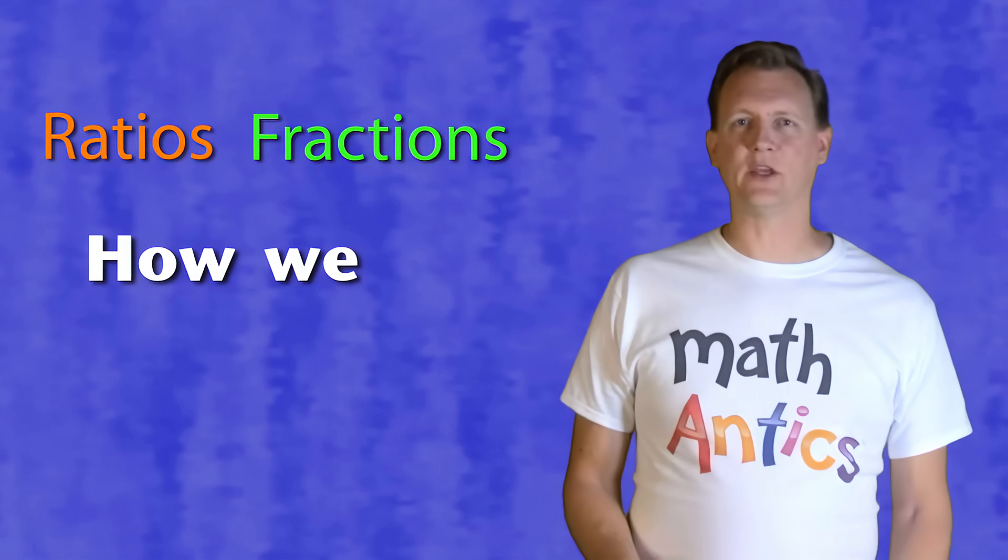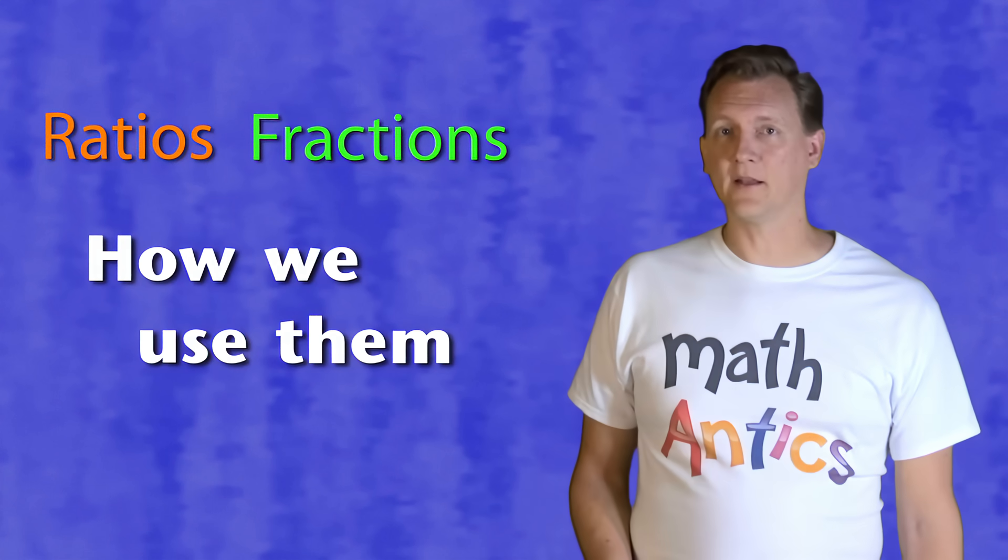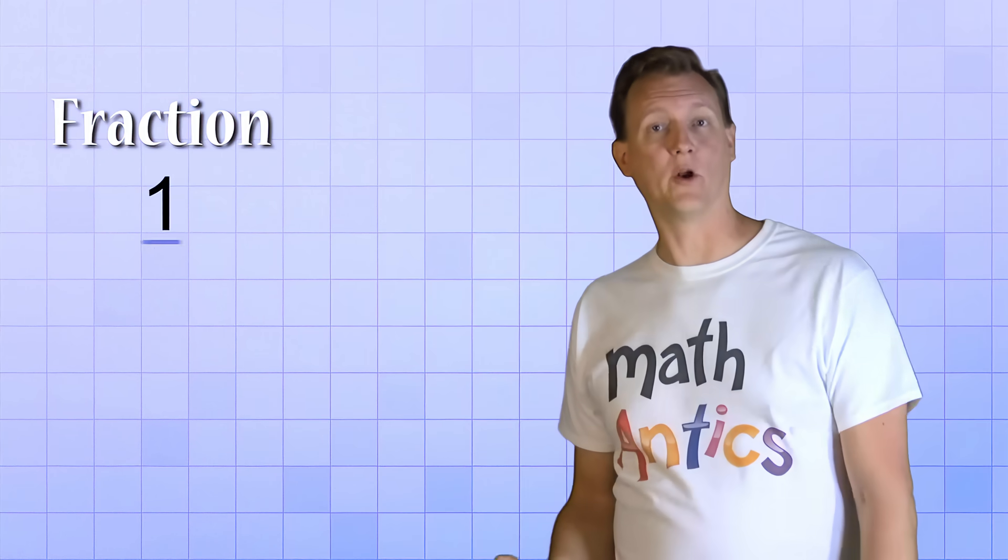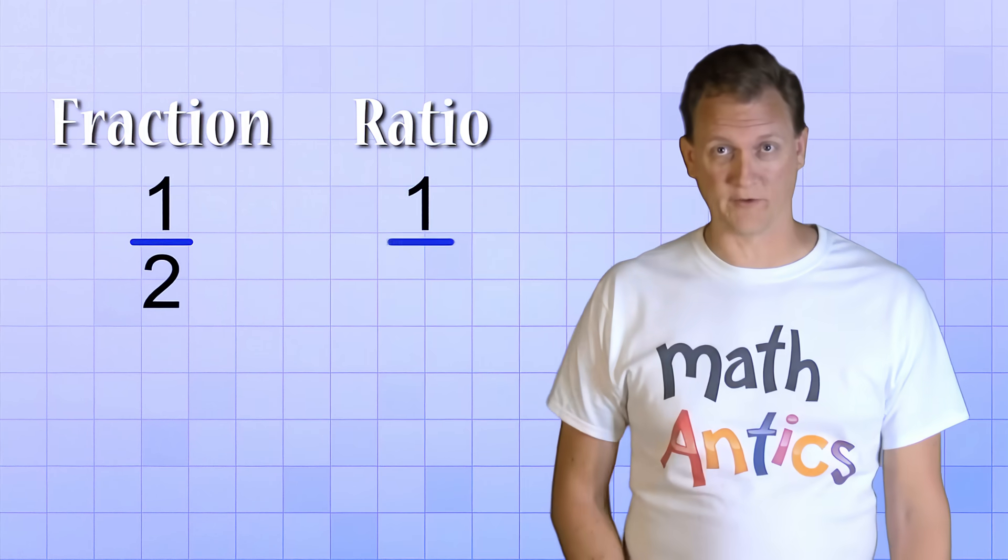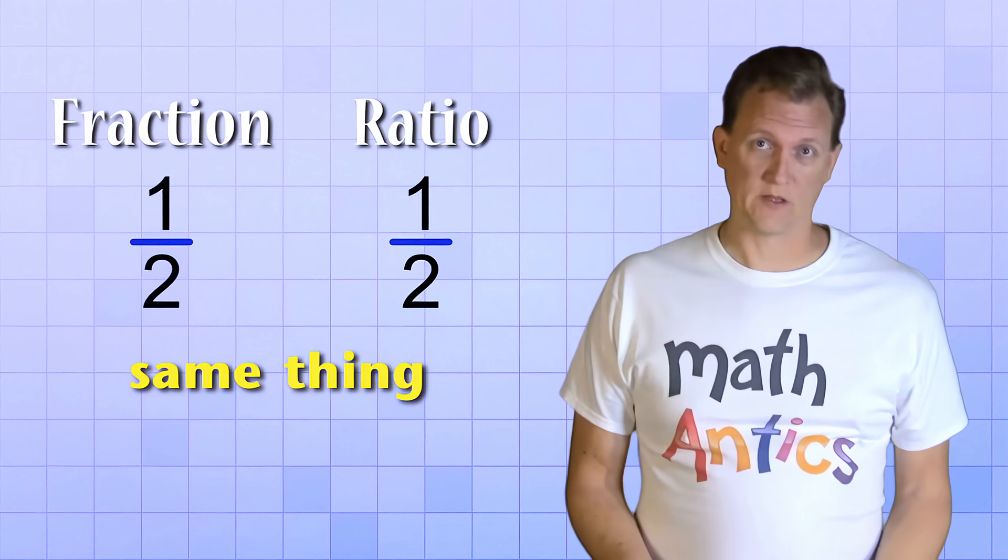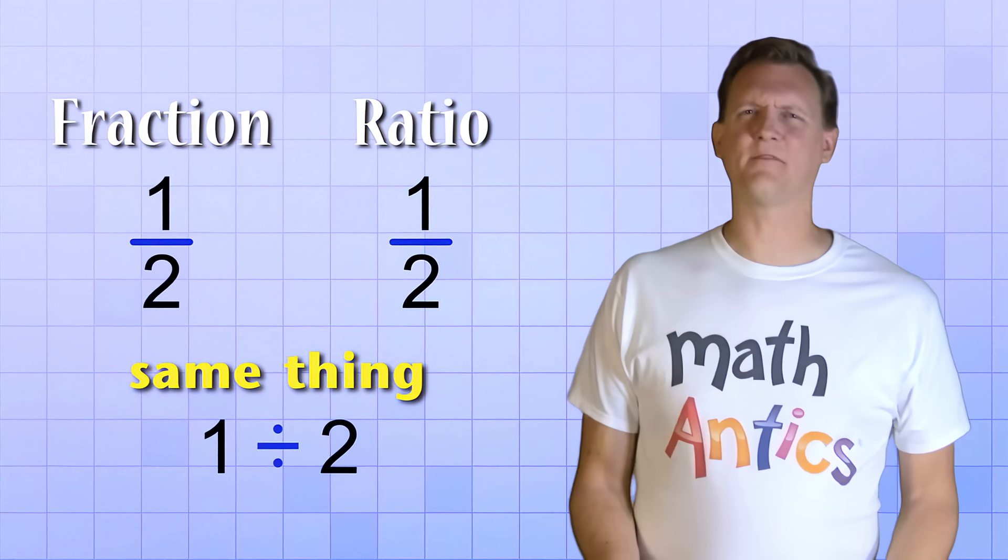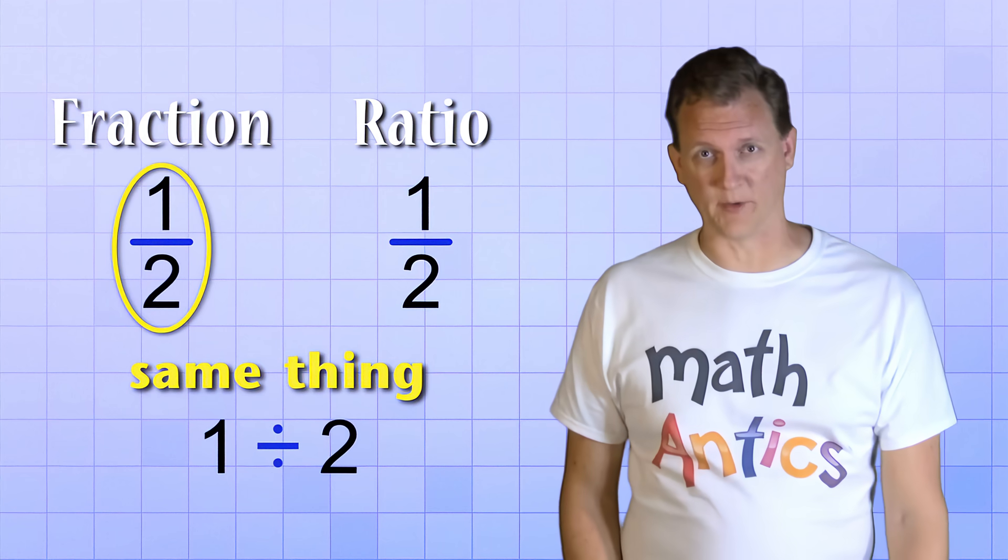Like I was saying, ratios are basically just like fractions. The difference is how we use them to describe things in the real world. To see what I mean, let's look at examples of how we could use the fraction 1 over 2 and the ratio 1 over 2. Mathematically, these are both the same thing. They're just the division problem 1 divided by 2. But in the case of the fraction, we usually treat it as if it's just a single number.